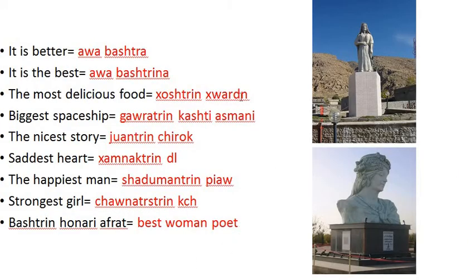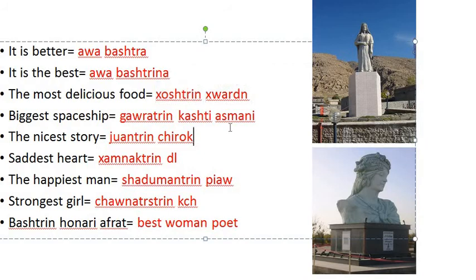'It is better' — 'awa bashtra.' 'It is the best' — 'awa bashtrina.' The most delicious food — 'khosttarin khodin.' In Kurdish, for comparison and superlative, you don't need to add articles.